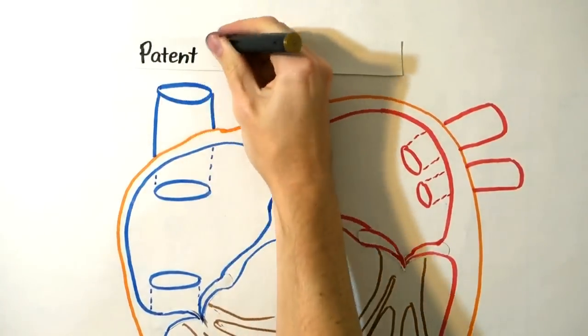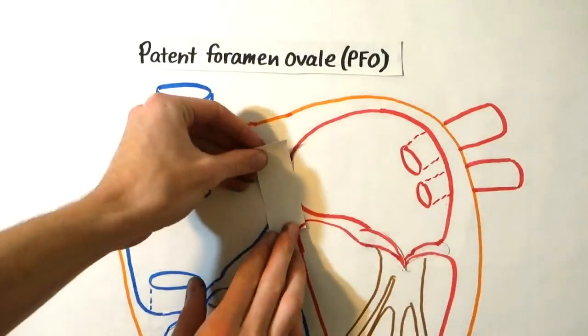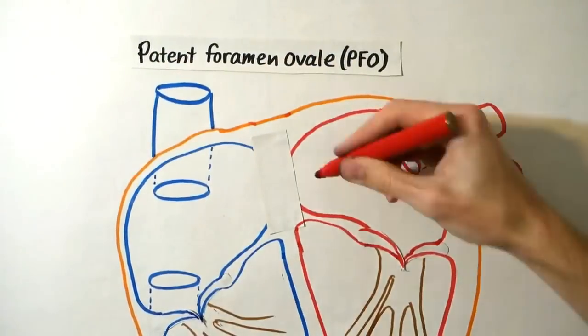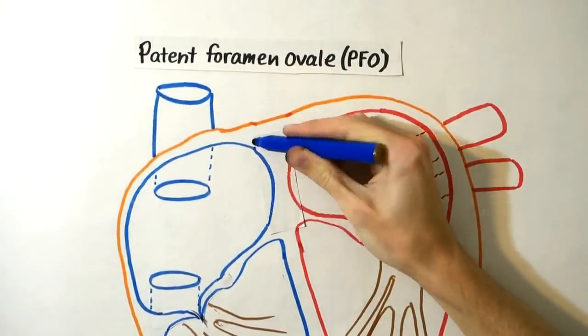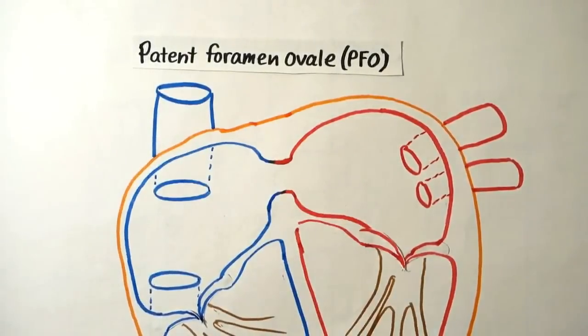Patent foramen ovale, or PFO, is a hole between the left and right atria of the heart. This hole exists in everyone before birth but usually closes shortly after being born. When the hole doesn't close, it is known as a PFO.